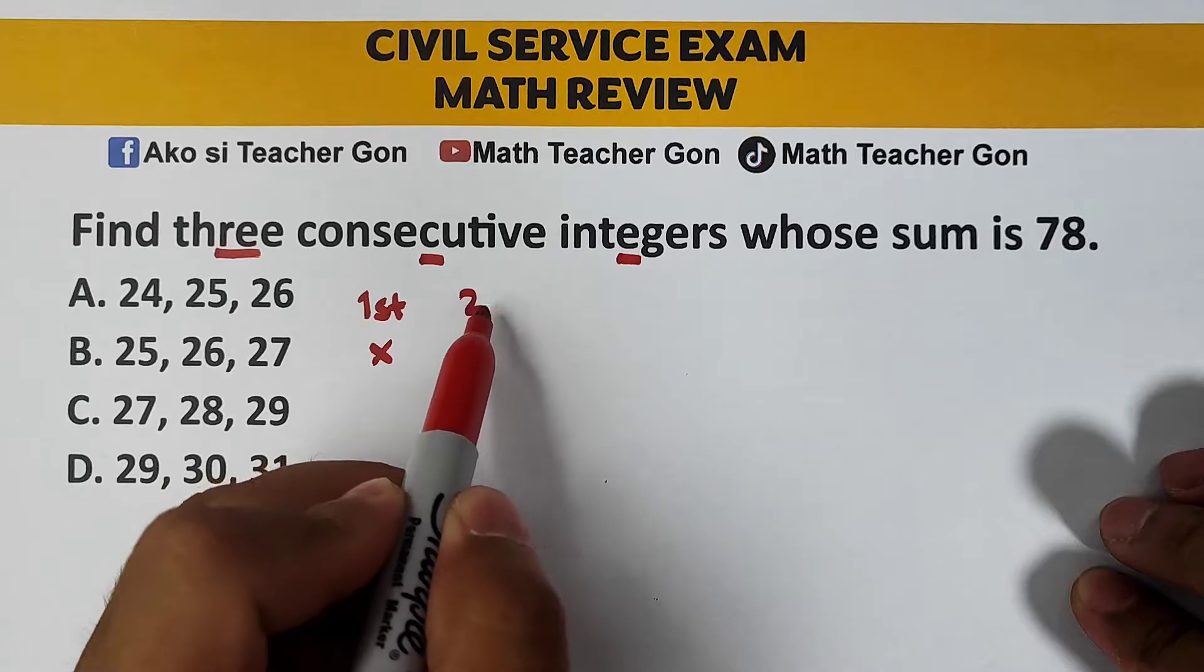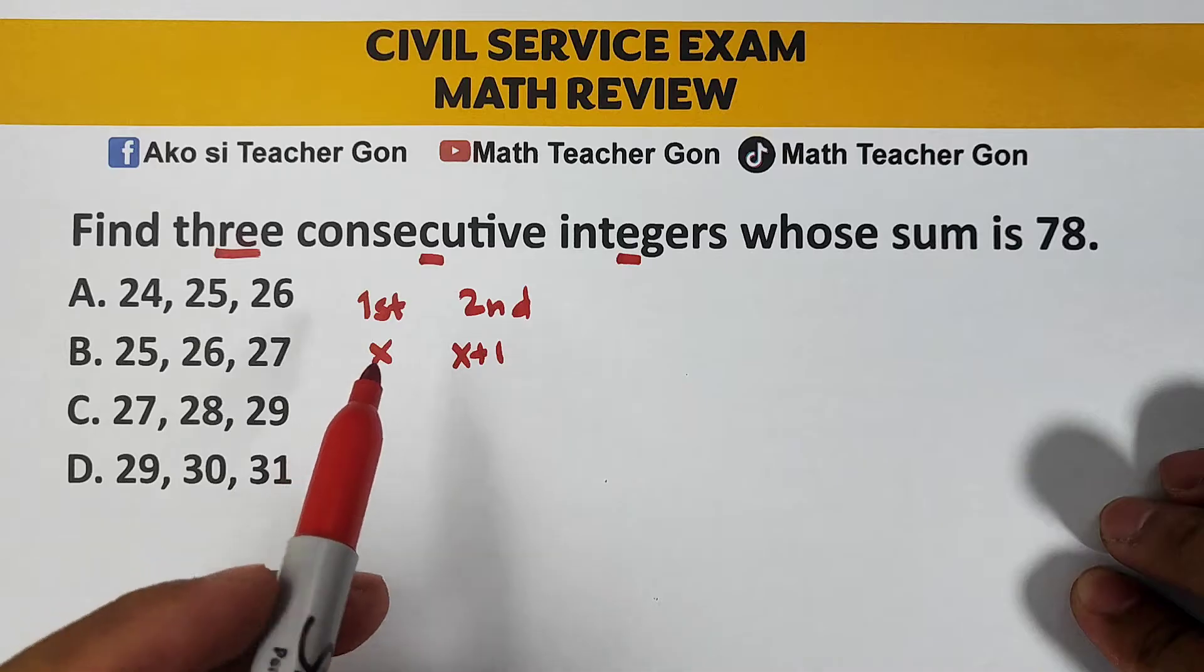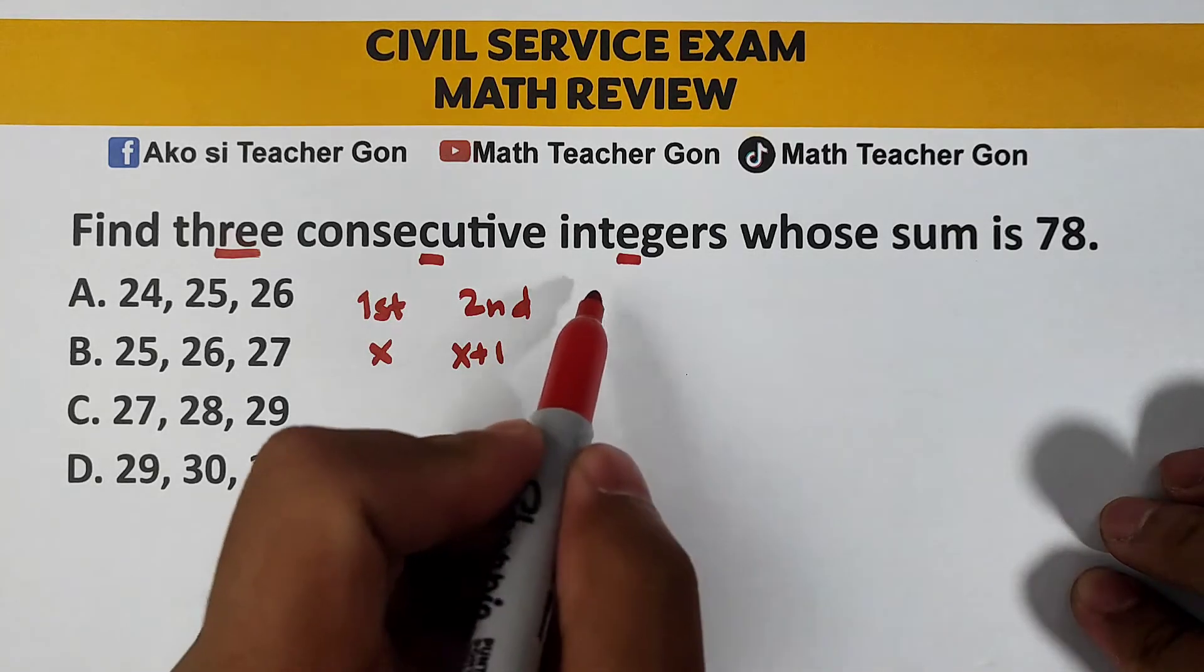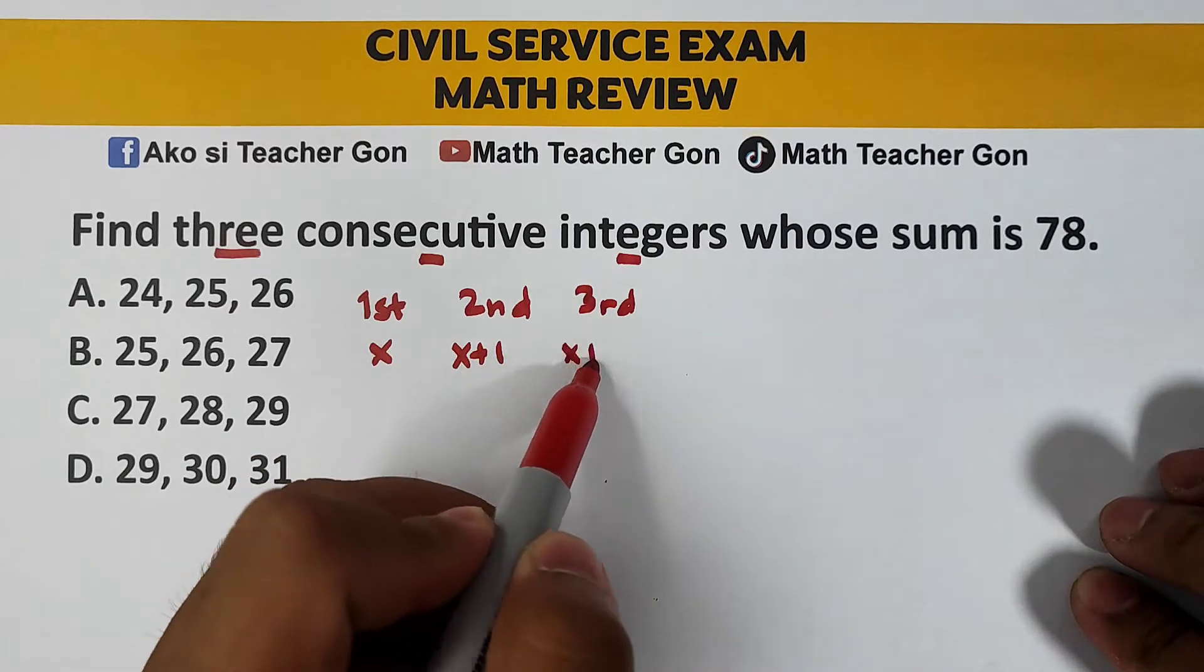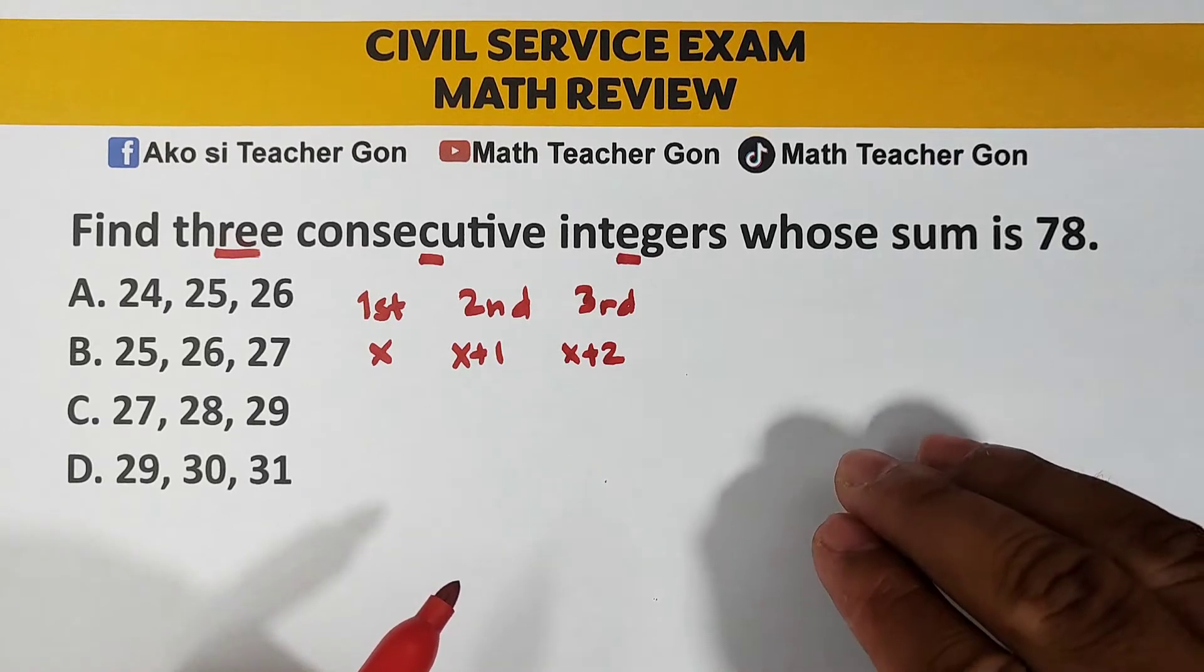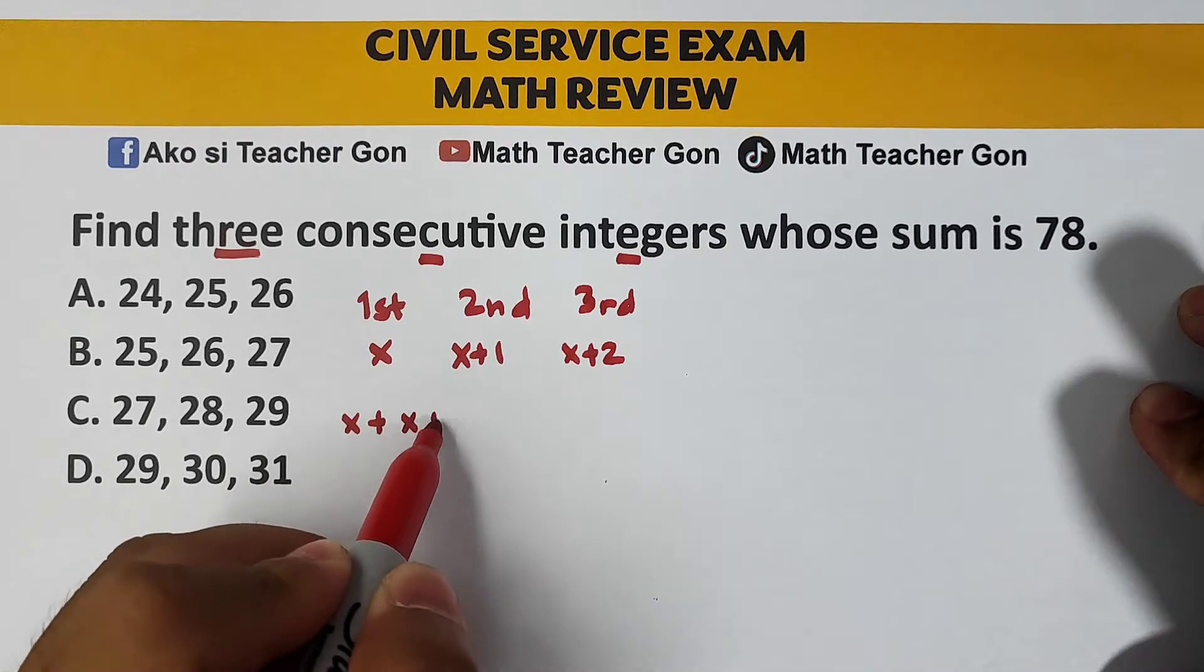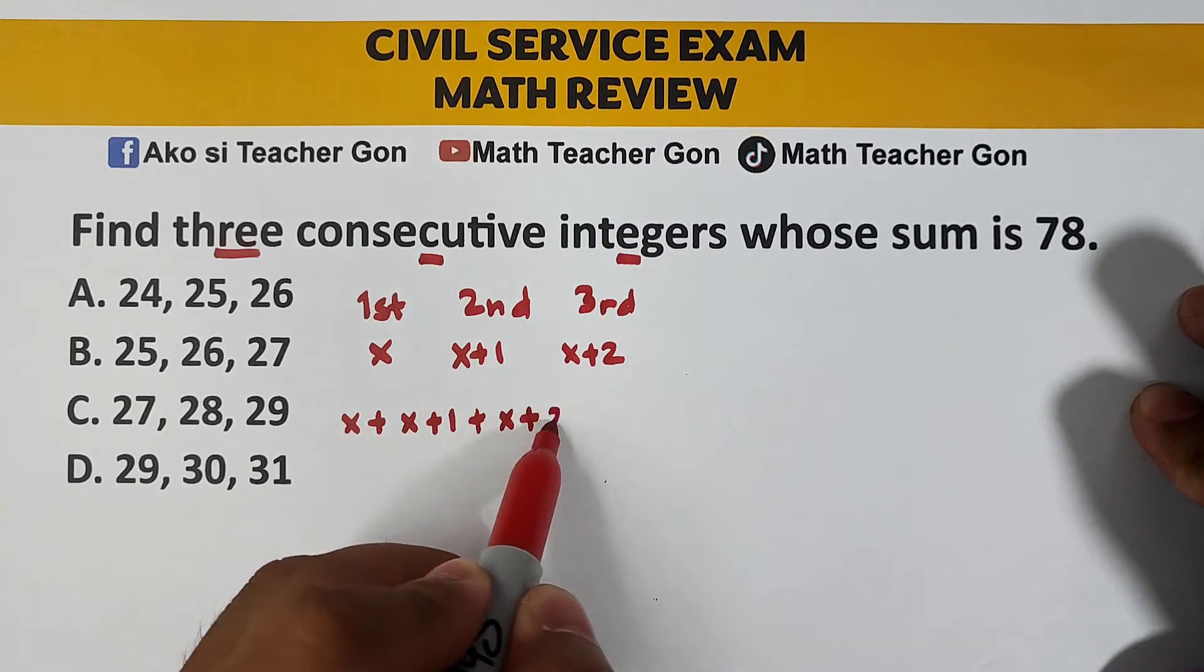the second as x plus 1. x plus 1 yun dahil the difference of consecutive integers from first to second to third is plus 1 lang naman. And for the third integer, we will represent that as x plus 2. Since we're trying to get the sum whose sum is 78, add natin silang tatlo. x plus x plus 1, third x plus 2